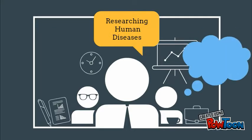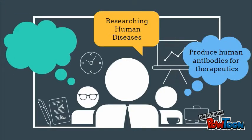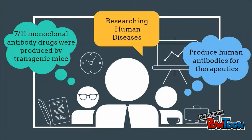They, specifically mice, have been genetically modified to produce human antibodies for therapeutics. In fact, seven out of eleven monoclonal antibody drugs are produced by transgenic mice.